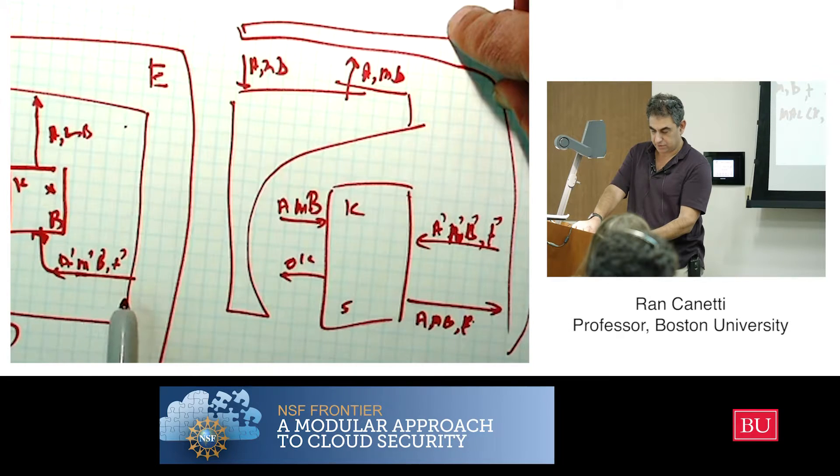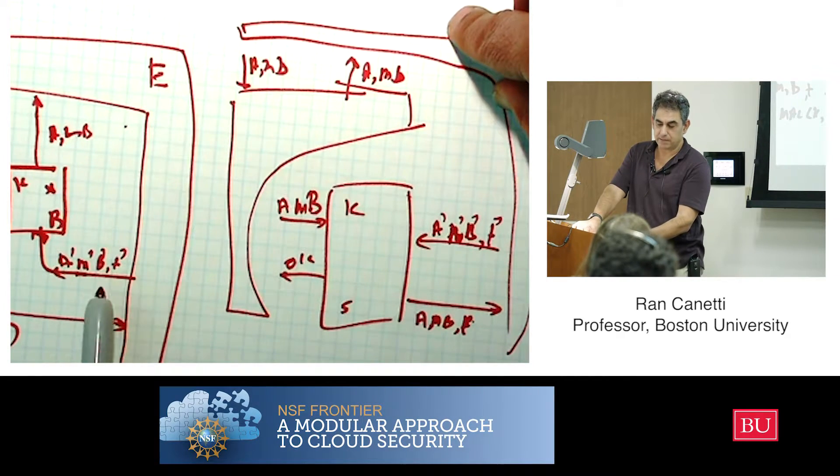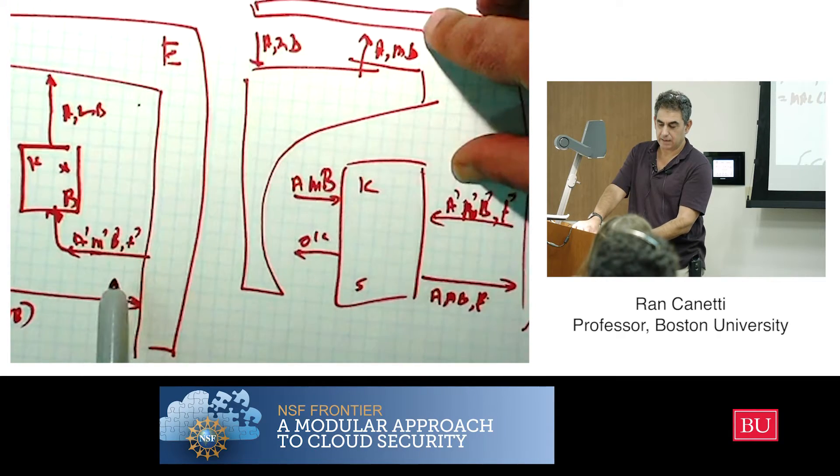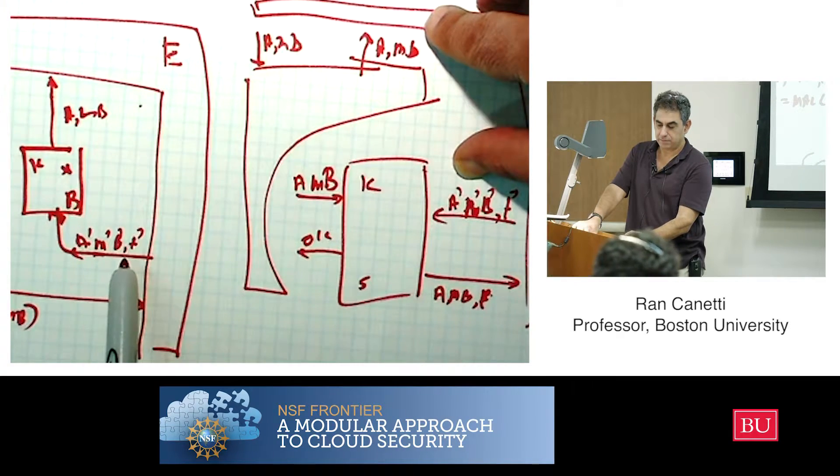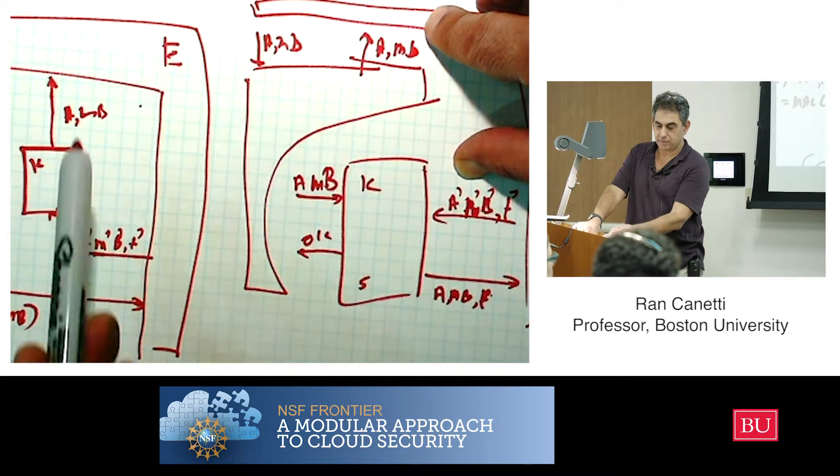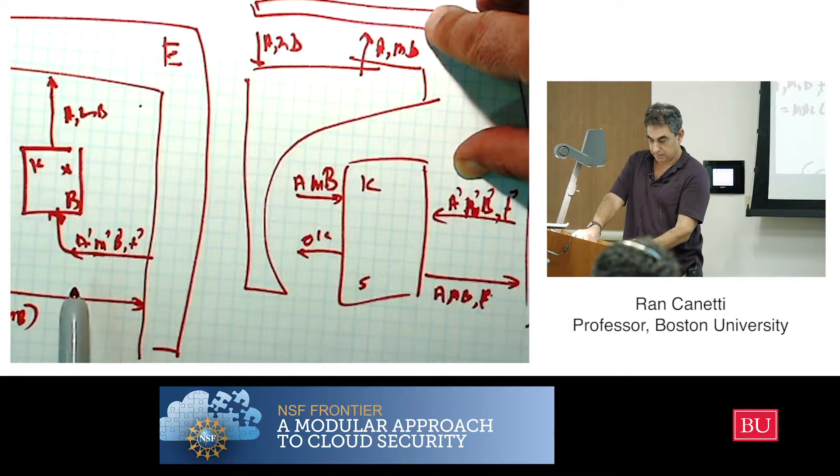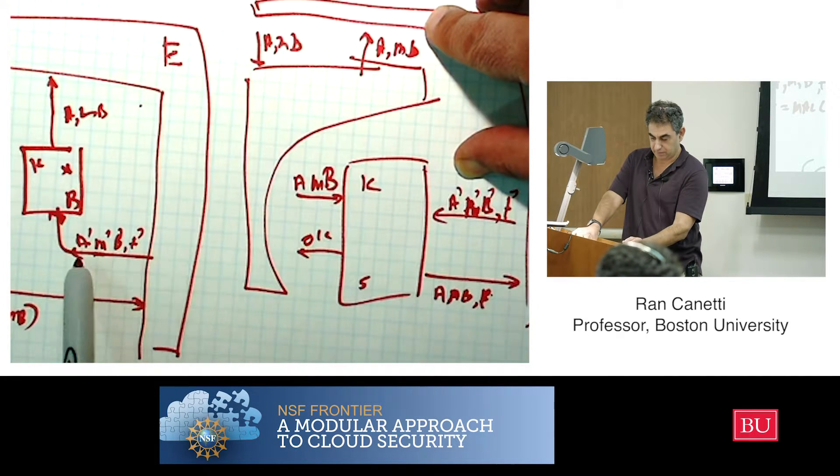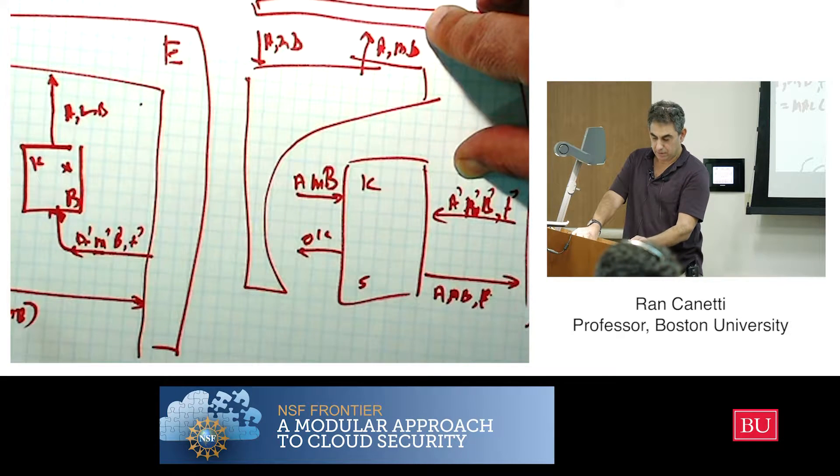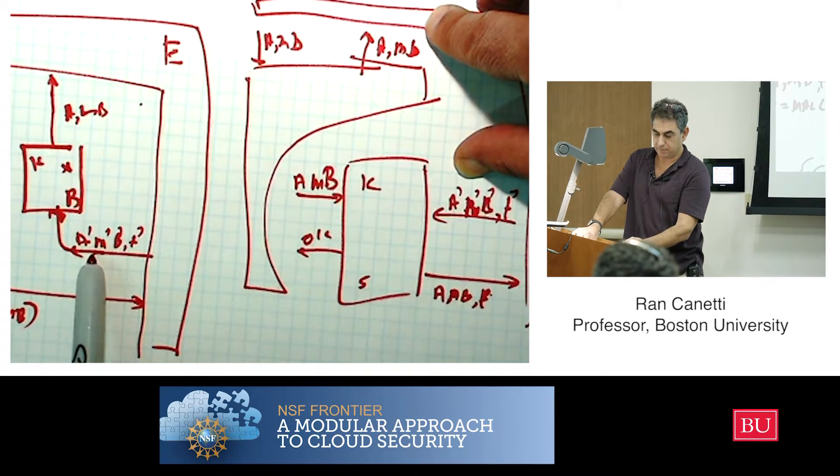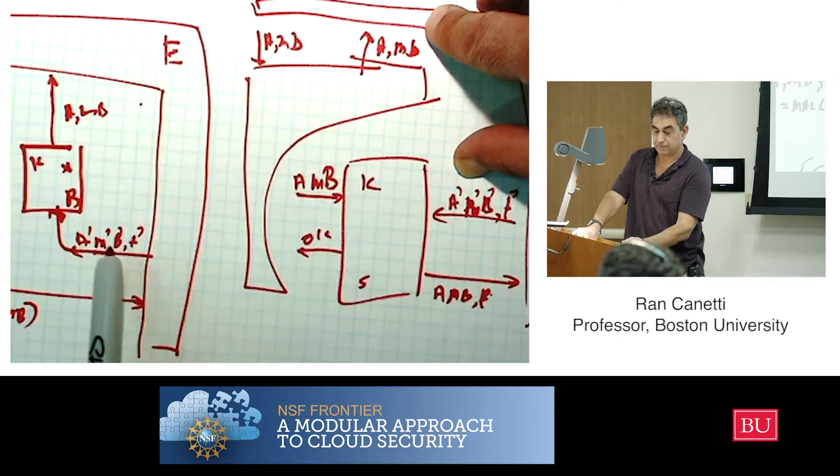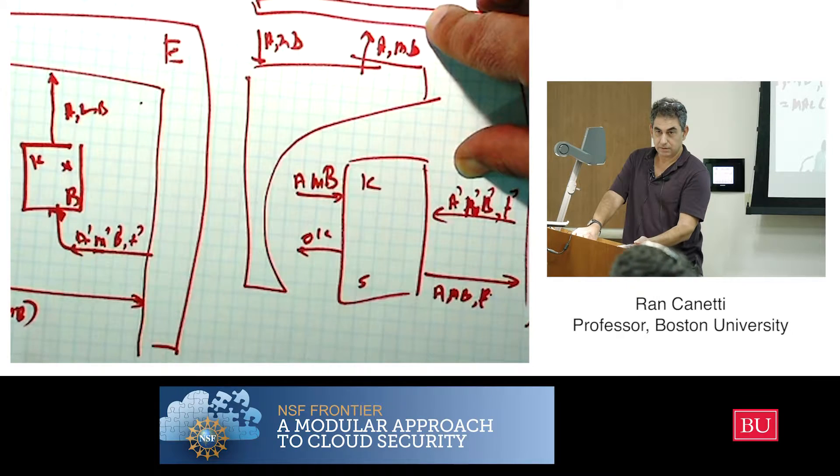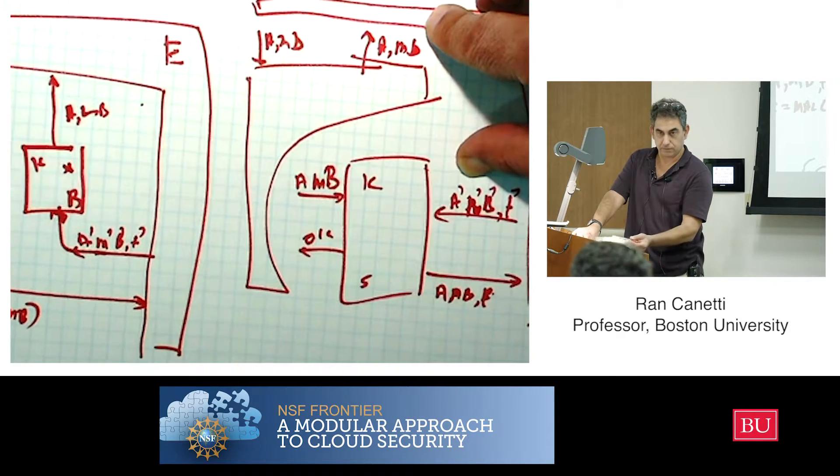What does it mean to forge the MAC? It managed to pass the checks. That means that B prime equals B, that's the only way in which the output, and the tag verifies. So what tag verifies means that either it actually replaced the tag that it got, it just copies it together with A and B, in which case it will happen, or it managed to generate an A prime, or an M prime and a T prime, that verify without having seen them before, in which case it actually forged the MAC.